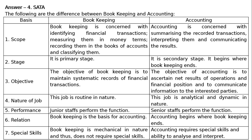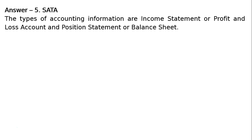Question 5: Discuss briefly the types of accounting information. Answer 5: The types of accounting information are the income statement (profit and loss account) and the position statement (balance sheet).